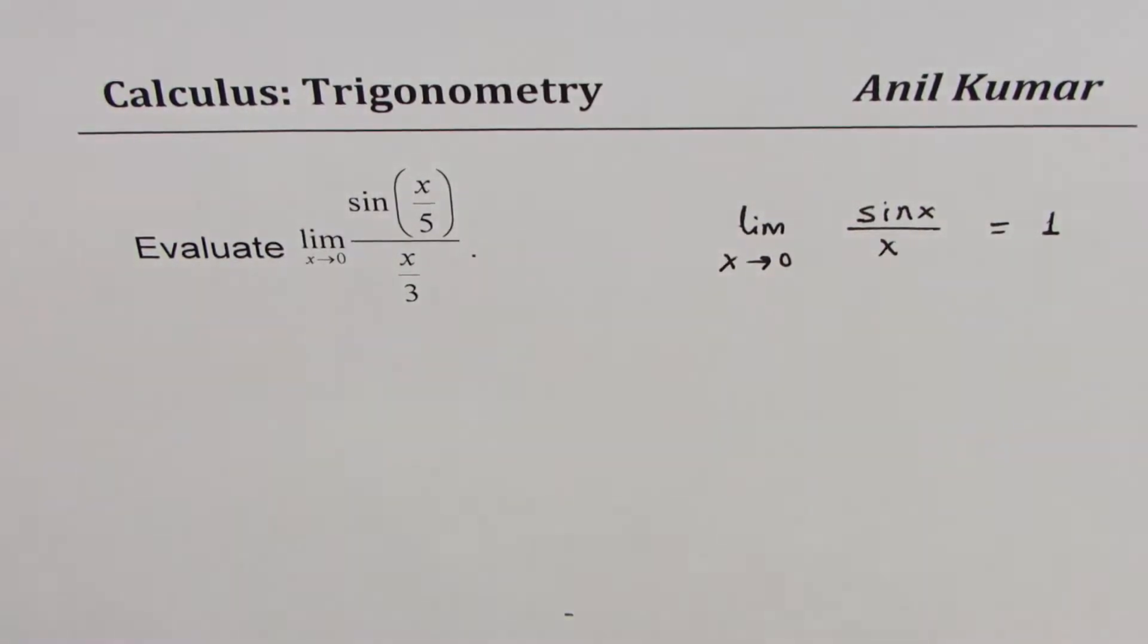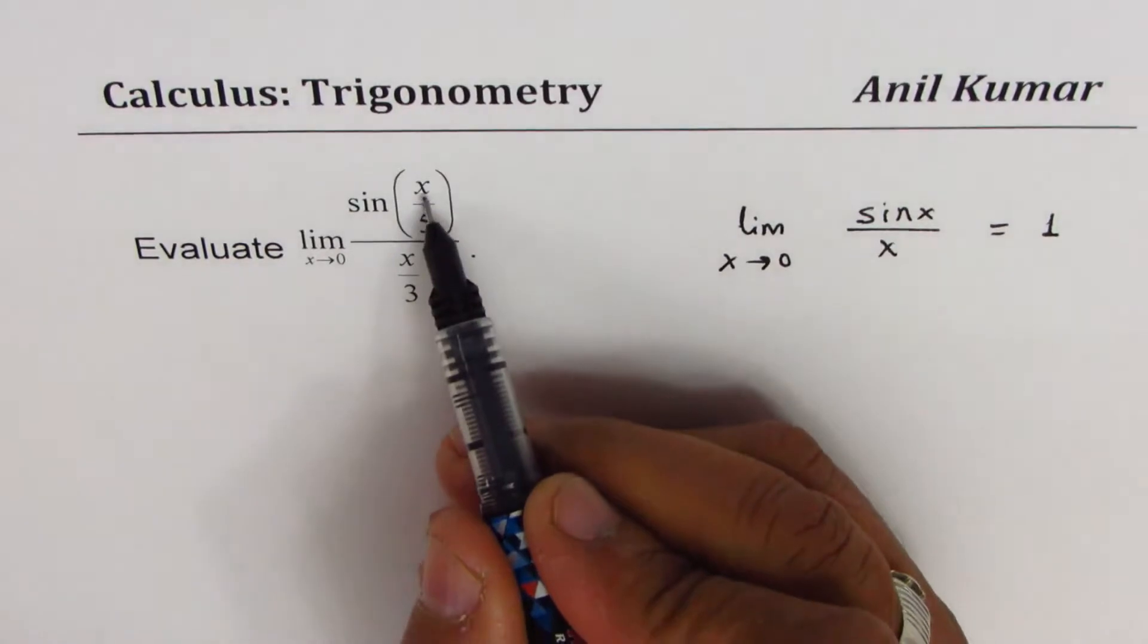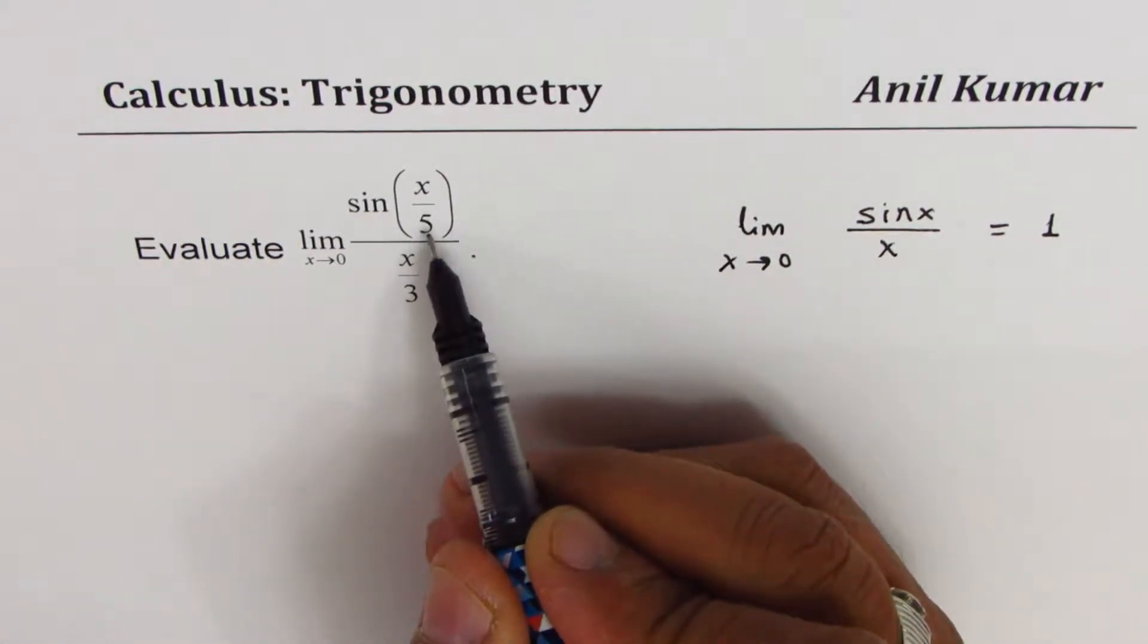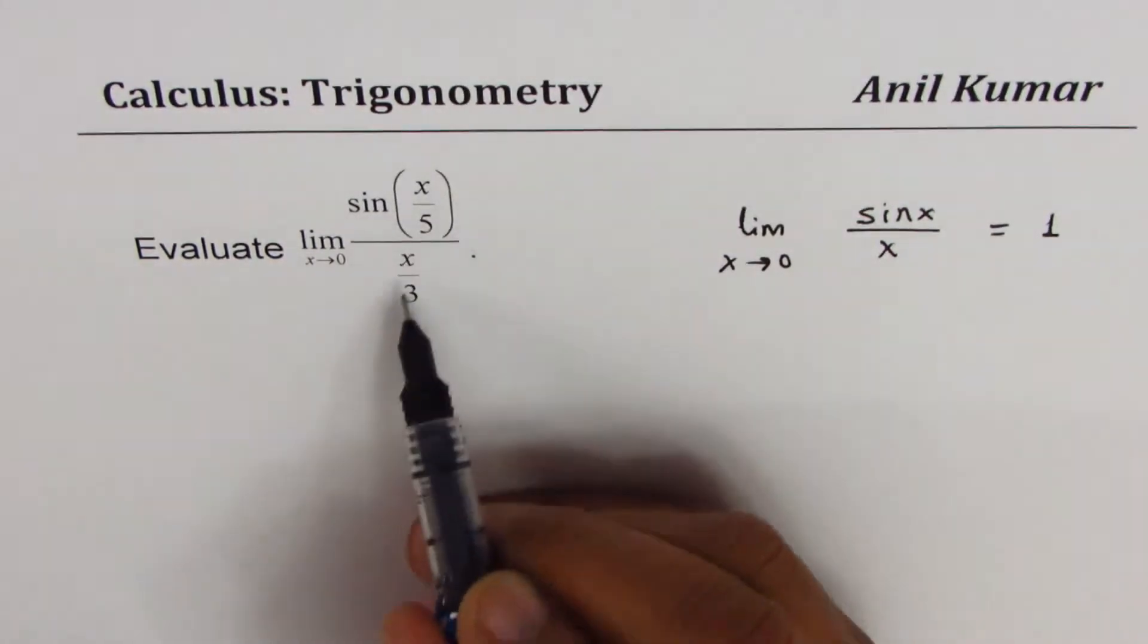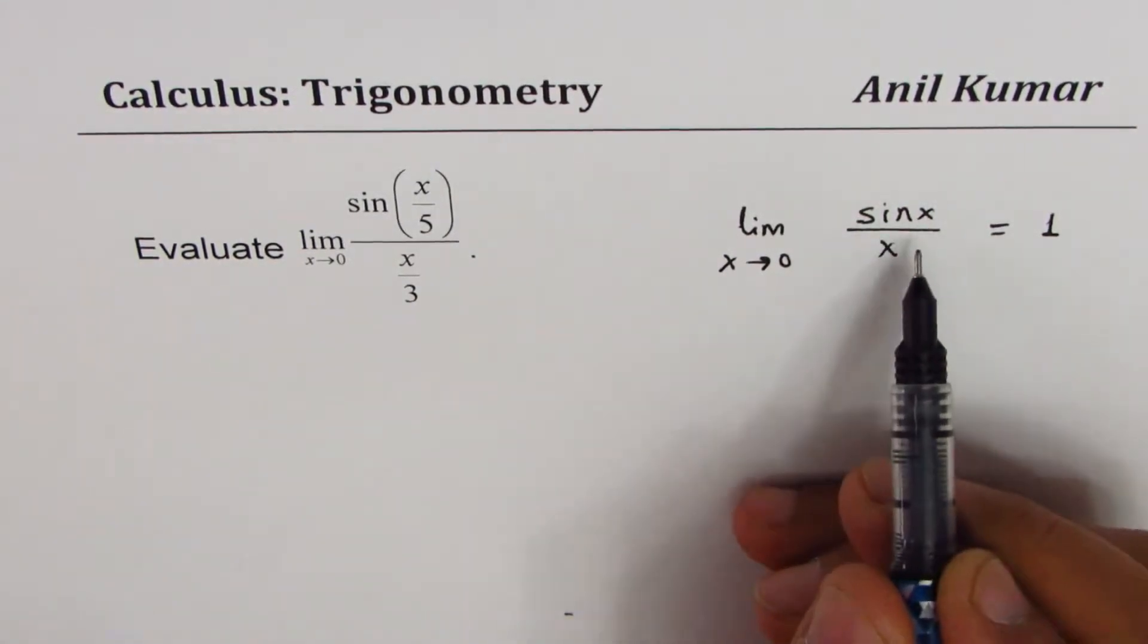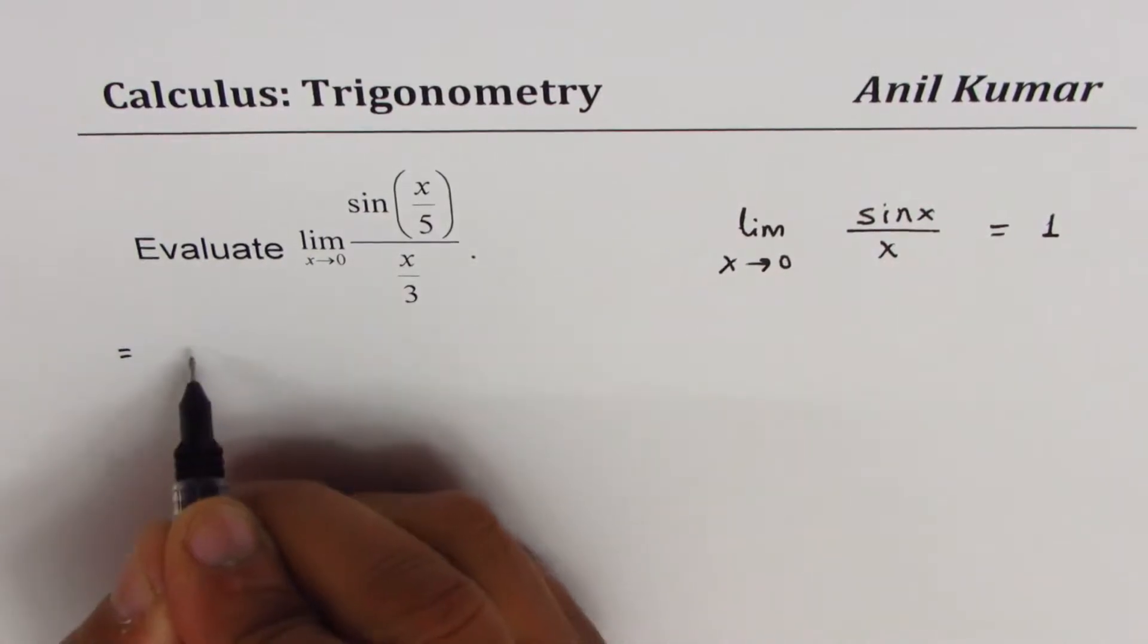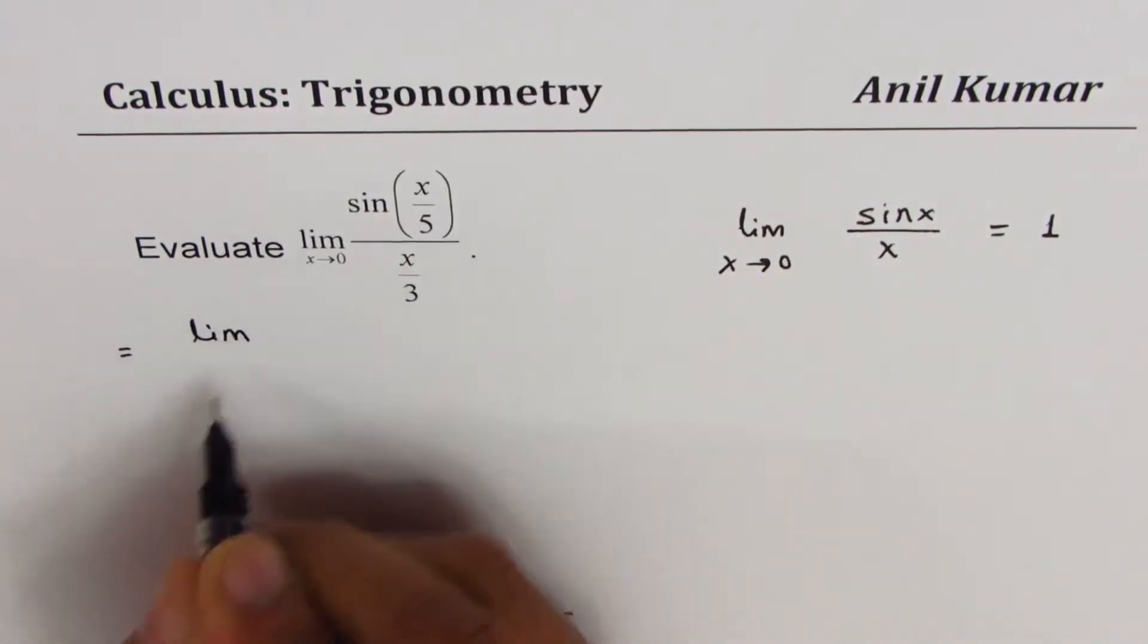Now, how do we make this work? If we could get x/5 in the denominator, we could use this formula directly. So let me rewrite this question.